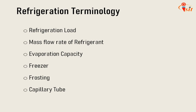The second terminology is Mass Flow Rate of Refrigerant. The refrigeration capacity of a system decides the mass flow rate of refrigerant when working under specified conditions. Mass flow rate of refrigerant is the ratio of refrigeration capacity to the refrigerating effect per kg of refrigerant.